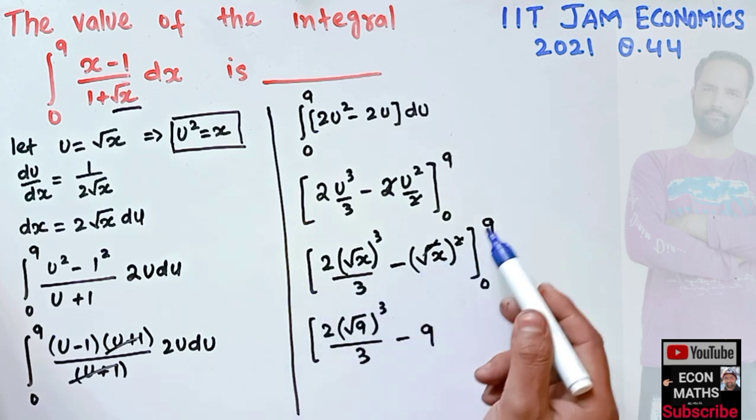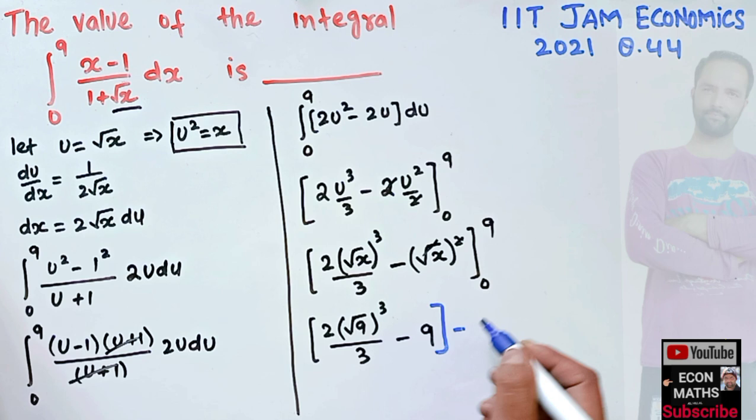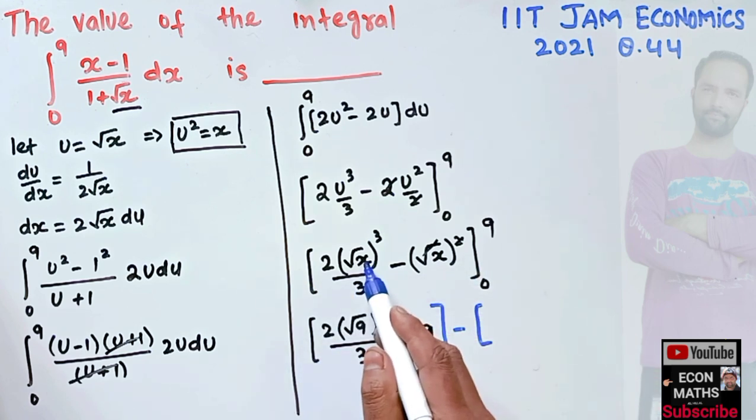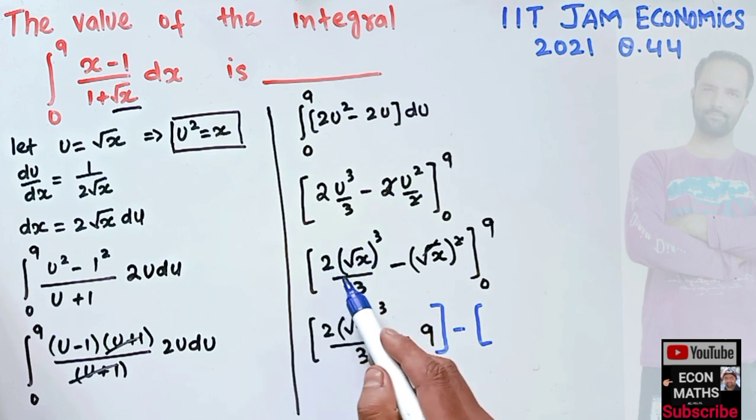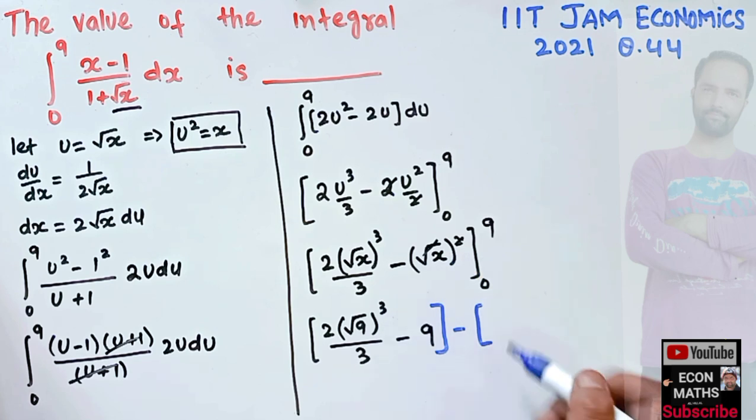We evaluate this expression at the upper limit first, that gives us 2[(√9)³/3 - 9]. Then we evaluate it at the lower limit. In place of x we have 0, so this whole term will become 0. The lower limit adds up to 0.